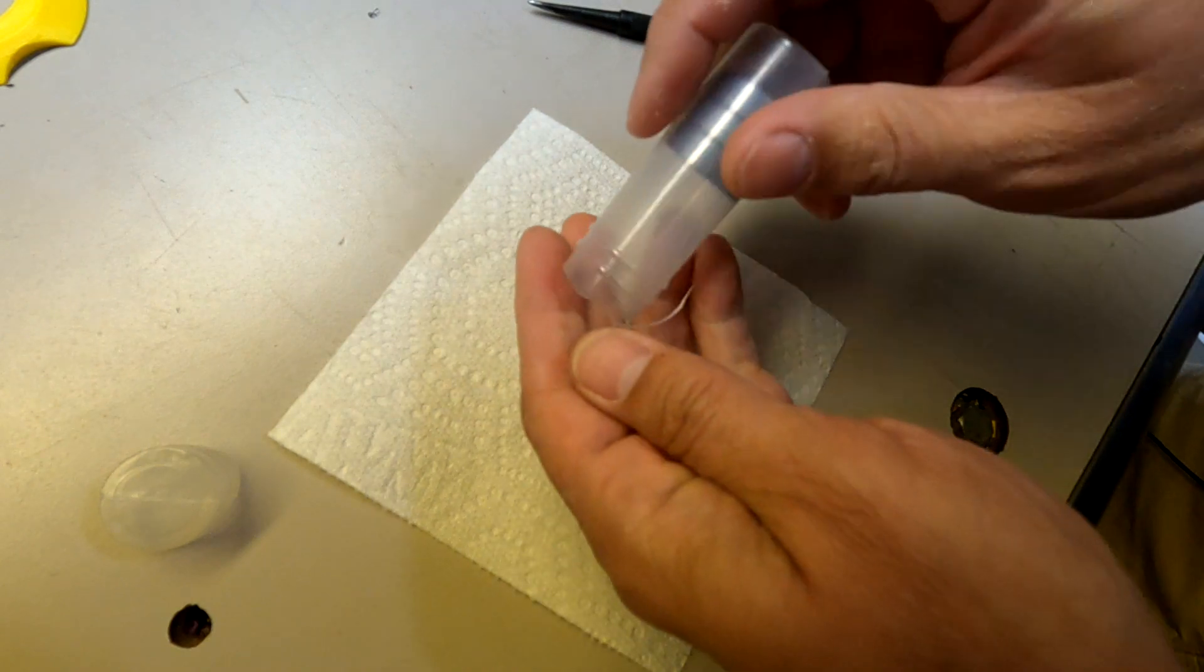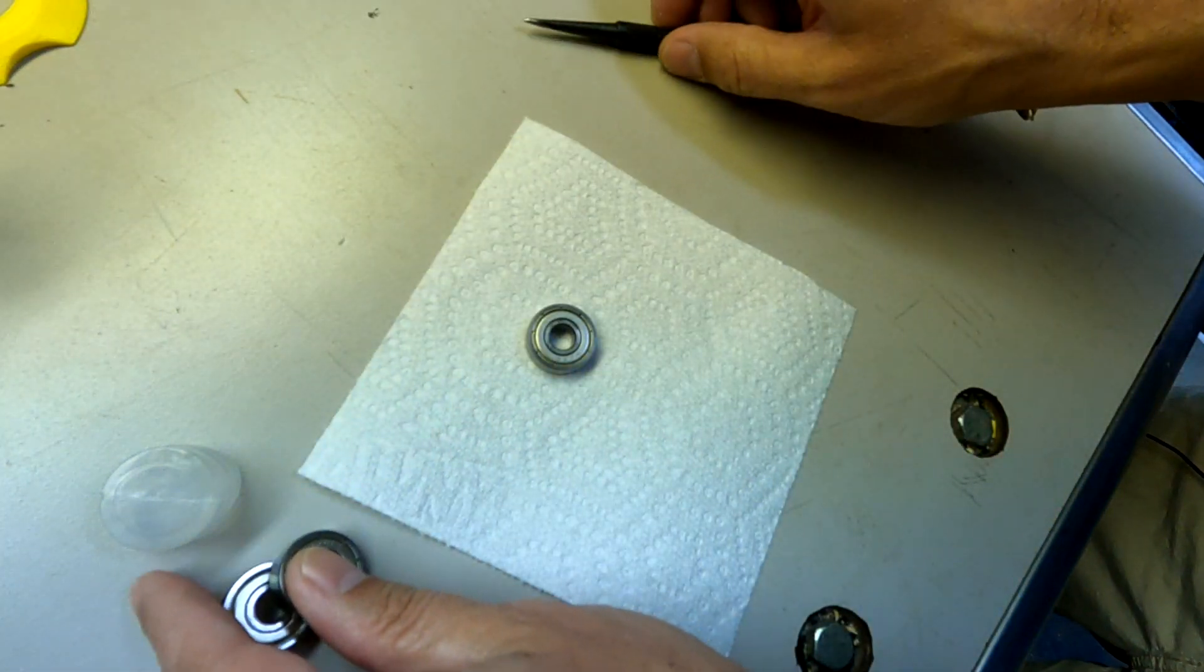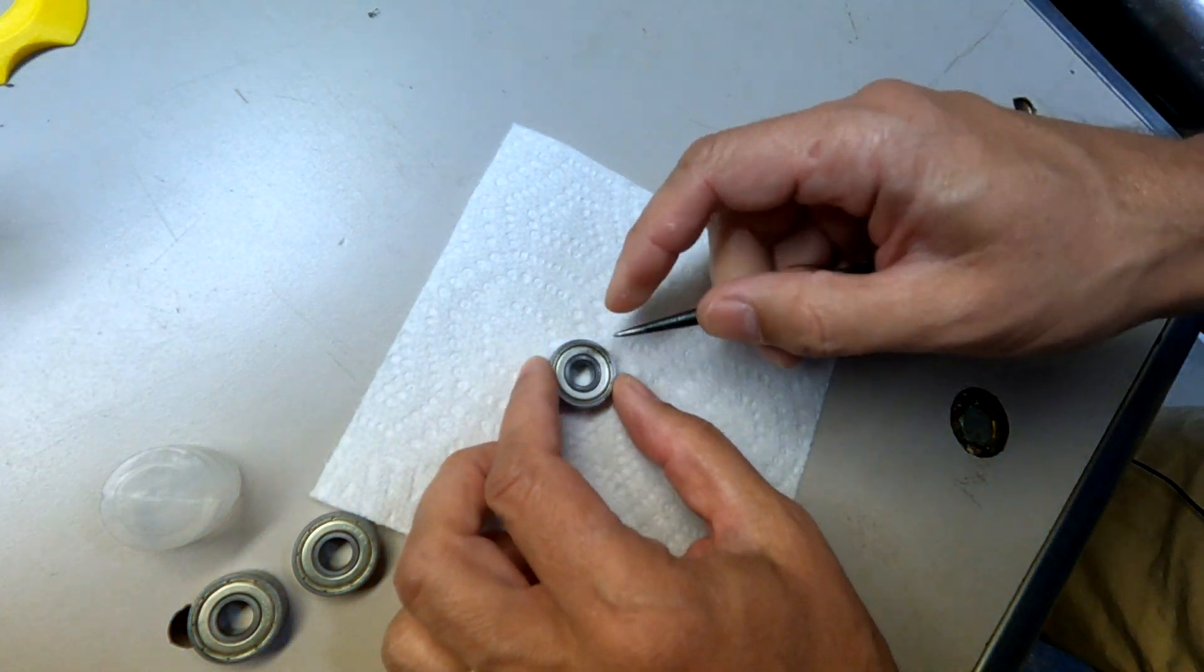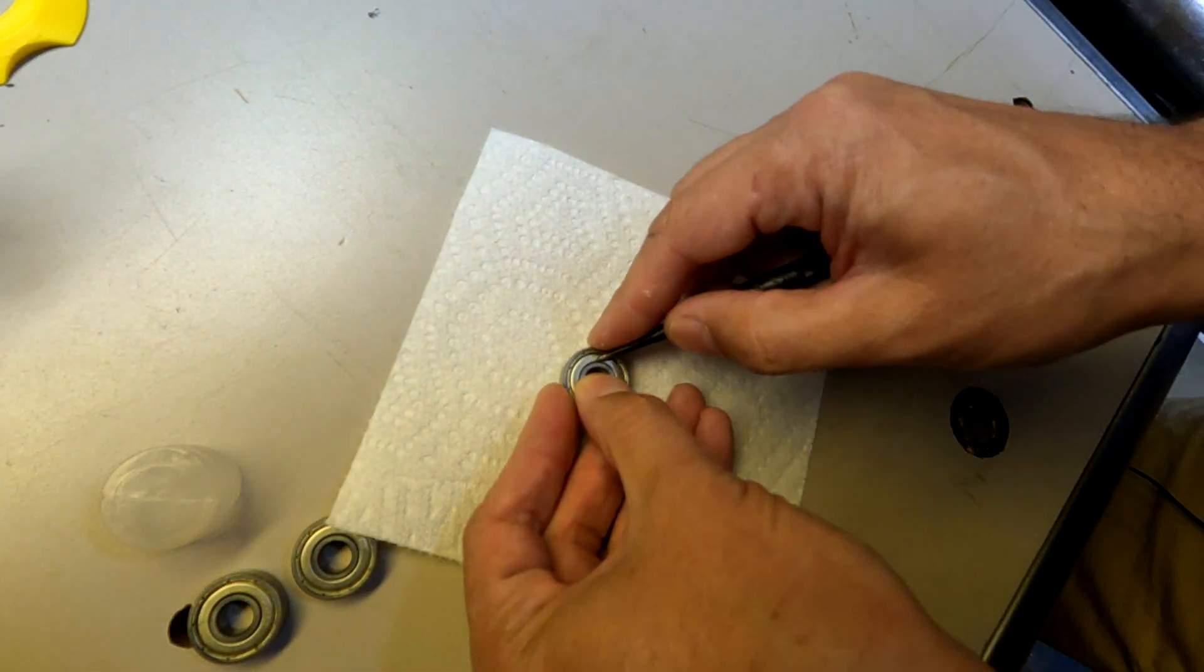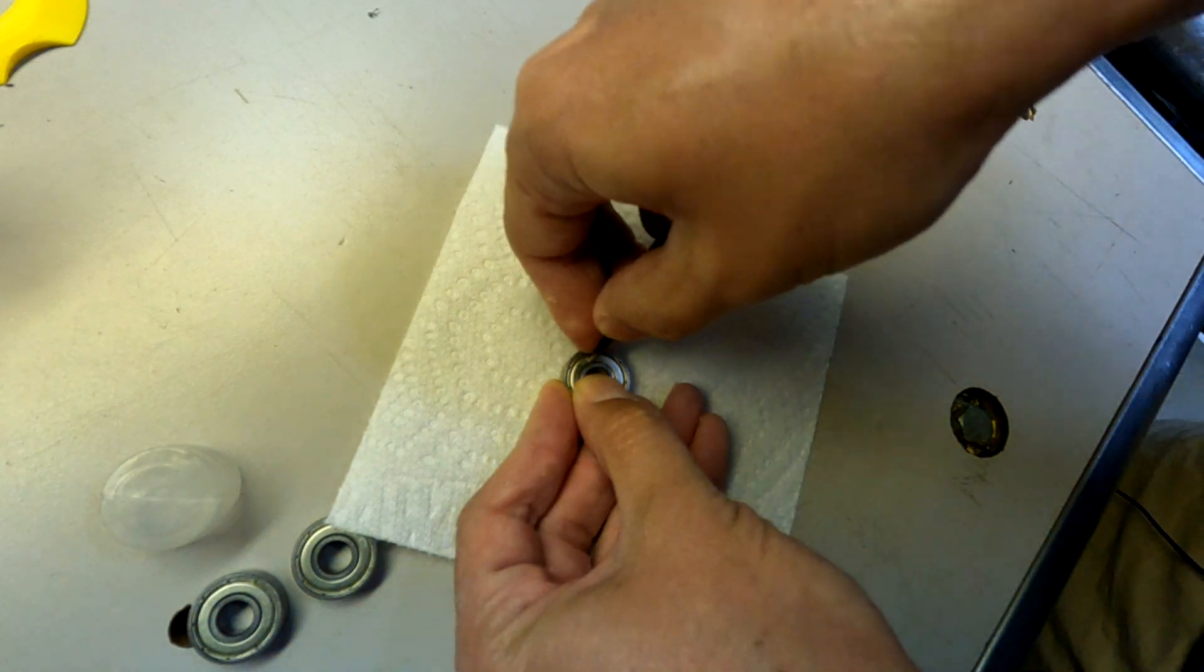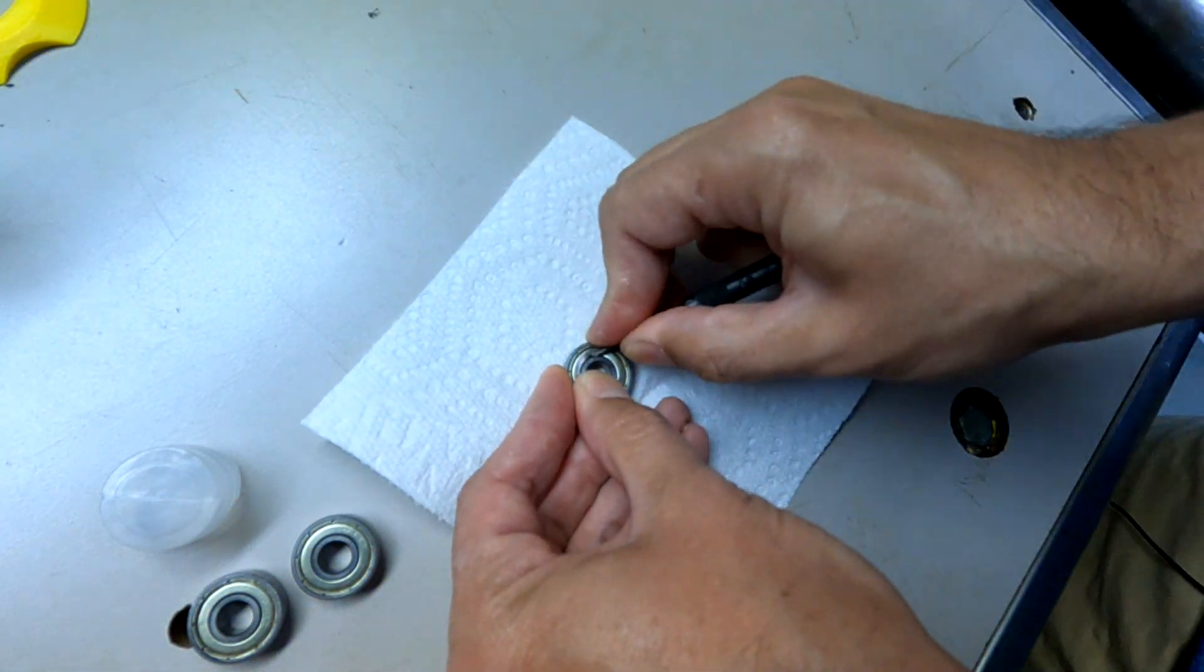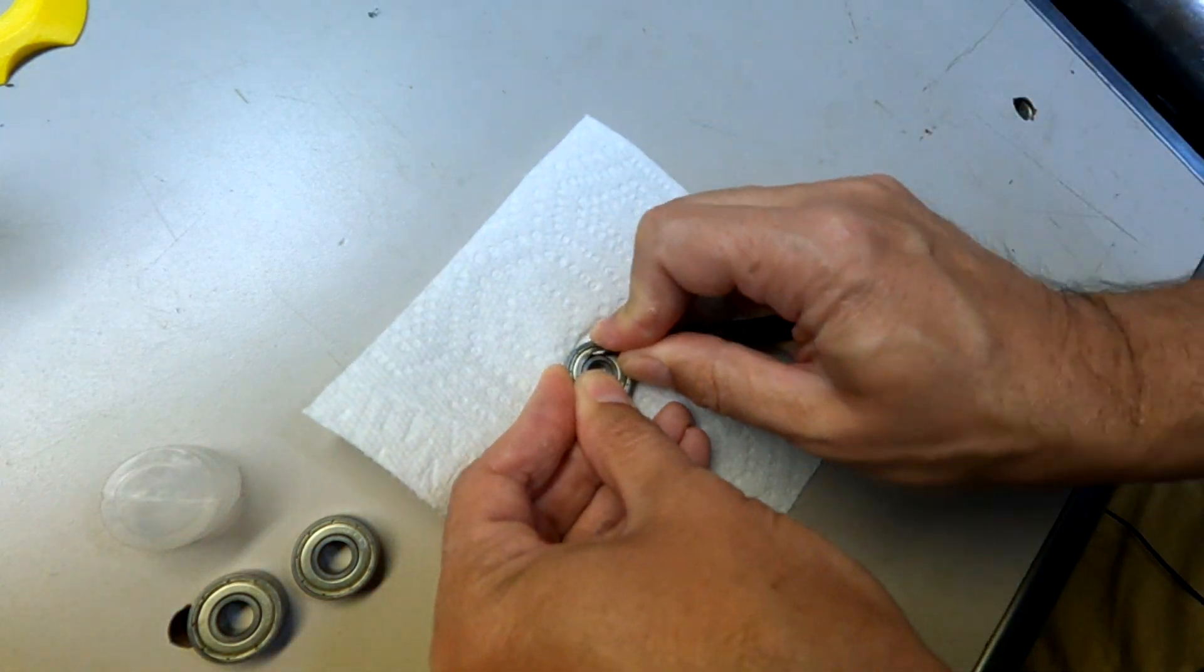To remove the side shields from these bearings I use a sharp awl or a punch. You take this and wedge the tip into the crack between the shield and the inner race and you've got to wiggle it until you can get the tip of it under the shield and then you pop it out.